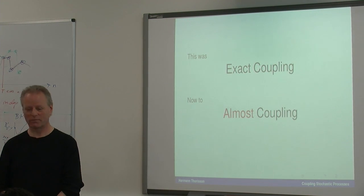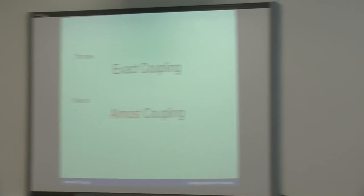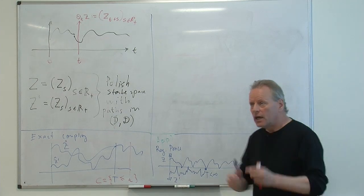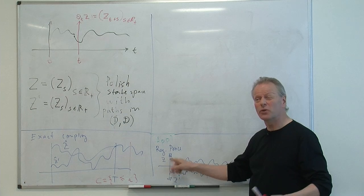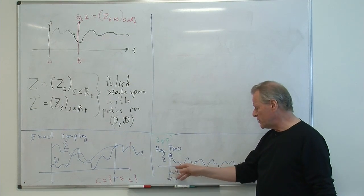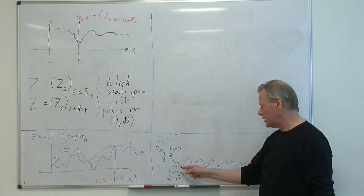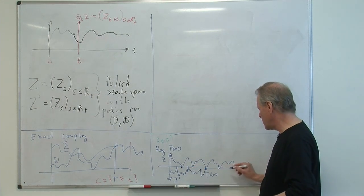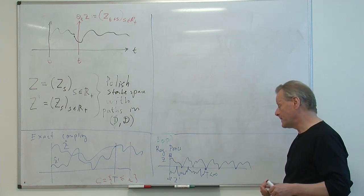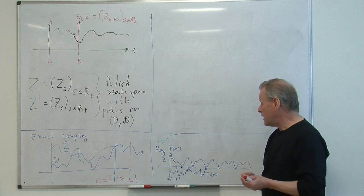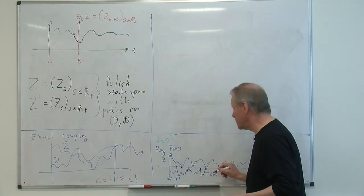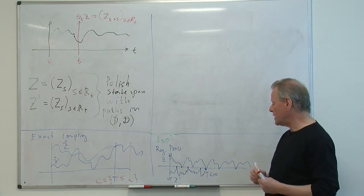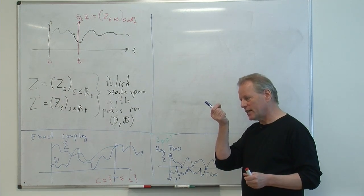How about almost coupling? It's wise to go to the regenerative case for that. If you have a regenerative process — a renewal process — you have a light bulb burning at time zero, it burns out, you put in a new one, and so on. You have a sequence of renewal times. Here is another independent sequence — two rooms lit by independent bulbs. They will never be changed exactly at the same time in this model.